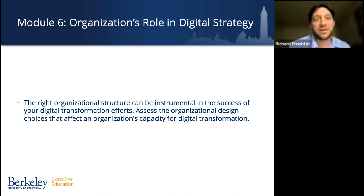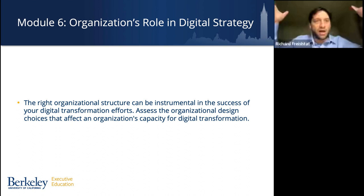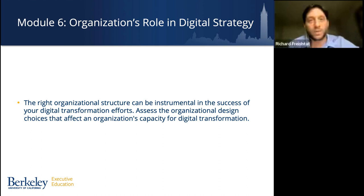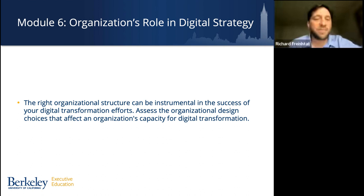It becomes natural at this point to look more broadly at the organization's role in digital strategy. You're seeing the first part of enabling digital transformation starting broad, getting more focused, then coming back out. The right organizational structure is instrumental in the success of digital transformation efforts — we've all seen examples where the idea was great but the structure and execution made it fail. Here you'll learn how to assess organizational design choices that affect the capacity for digital transformation, and how to set yourself up for success to leverage this strategy in the most productive way possible.